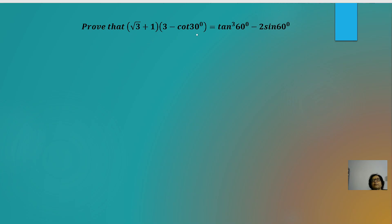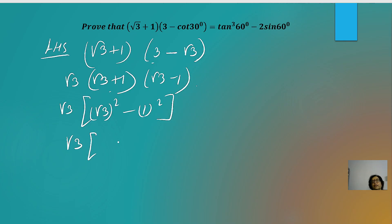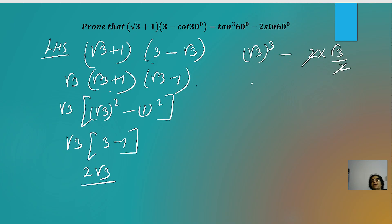Next: prove that (√3 + 1)(3 − cot 30°) = tan³60° − 2sin 60°. LHS: cot 30° = √3, so (√3 + 1)(3 − √3) = √3(√3 + 1)(√3 − 1) using factoring = √3(3 − 1) = 2√3. RHS: tan³60° − 2sin 60° = (√3)³ − 2·(√3/2) = 3√3 − √3 = 2√3. LHS = RHS = 2√3, proved.